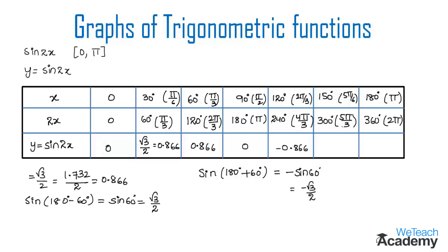For 300 degrees: sin 300° = sin(180° + 120°) = −sin 60° = −root 3 by 2, giving −0.866. And for 360 degrees: sin 360° = 0, so we get 0 as the value of y.